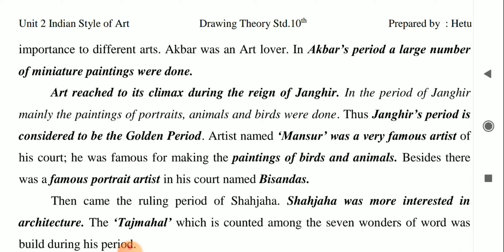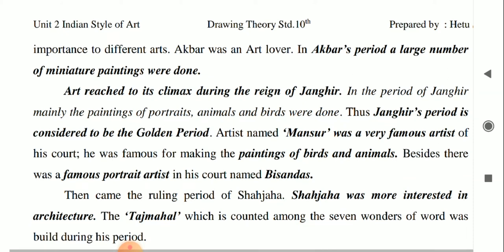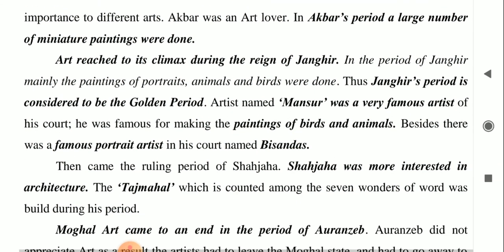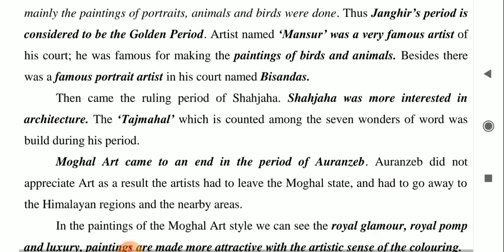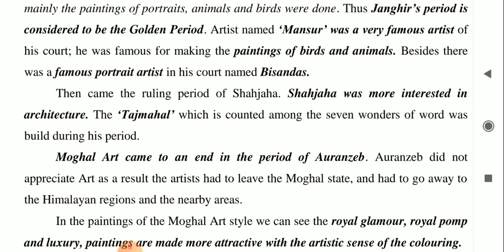Art reached its climax during the reign of Jahangir. Akbar had to settle in India properly and manage many things, but Jahangir had much more time, so art reached its peak in his period. In Jahangir's period, mainly paintings of portraits, animals, and birds were done. Thus, Jahangir's period is considered the golden period. The famous artist Mansur was well known for painting birds and animals, and the famous portrait artist Besindas was also in his court.